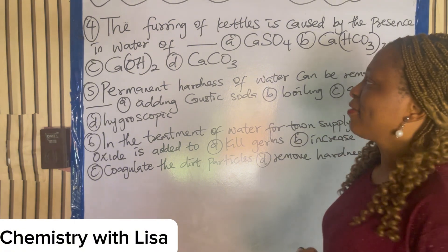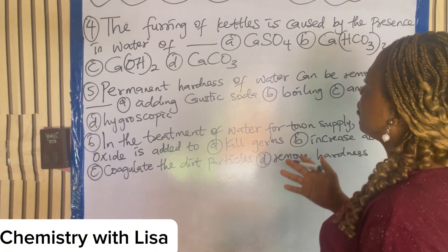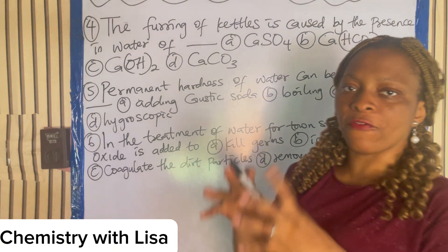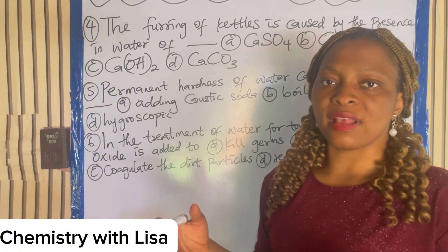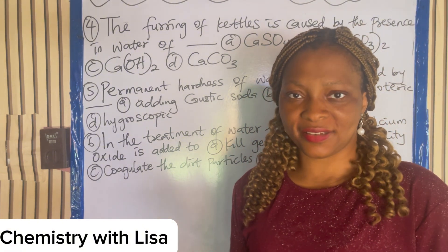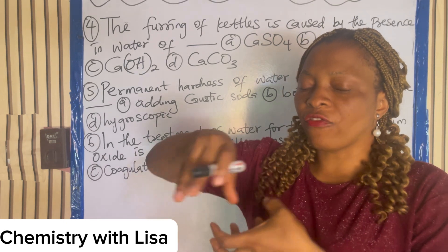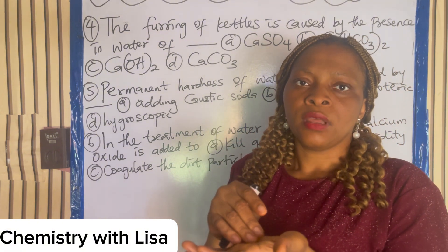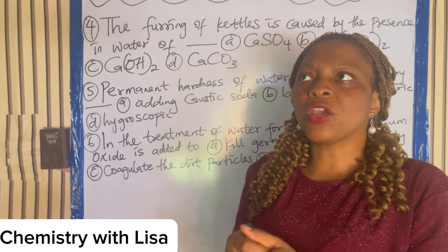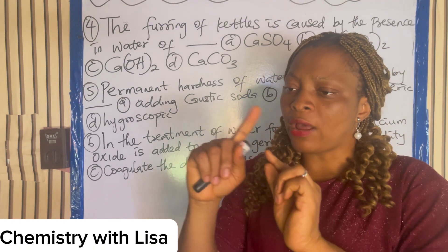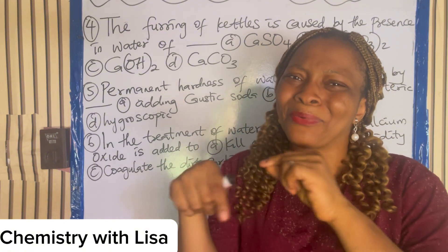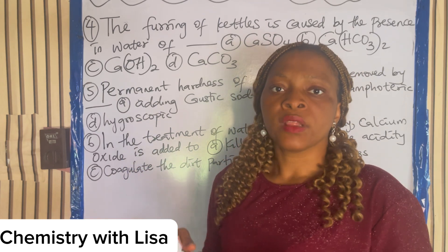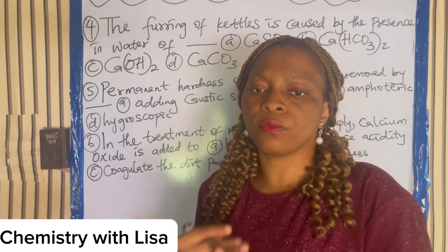Number four: the furring of kettles is caused by the presence in water of what? When you boil water in kettles, if the water is hard, it causes furring. When you look inside your kettle you will see milky white deposits — that is referred to as furring. If you are using a boiler, the same thing applies — around the ring you will see a milky white-brown deposit, also referred to as furring of the boiler or kettle.